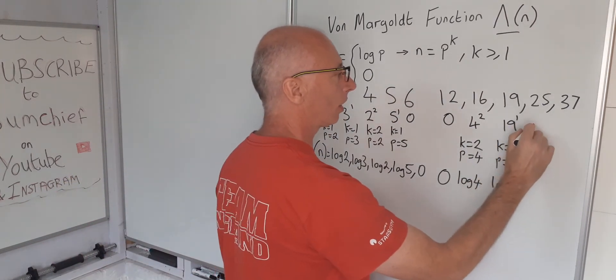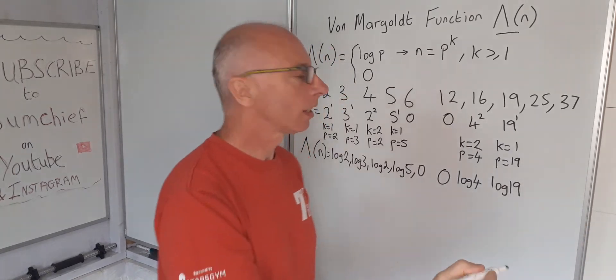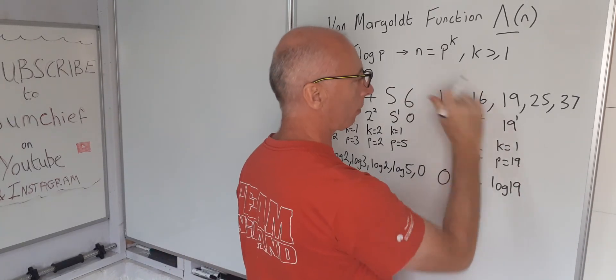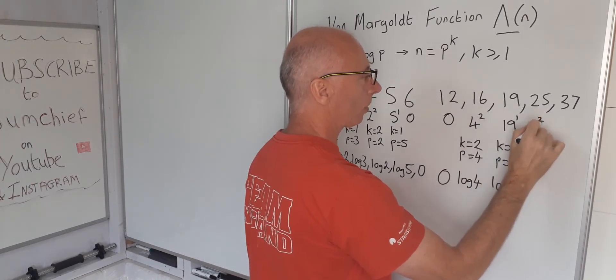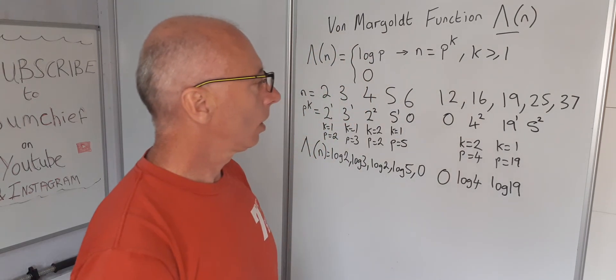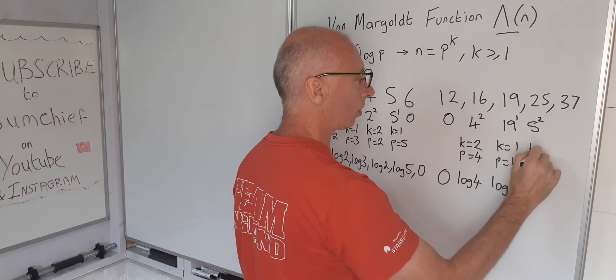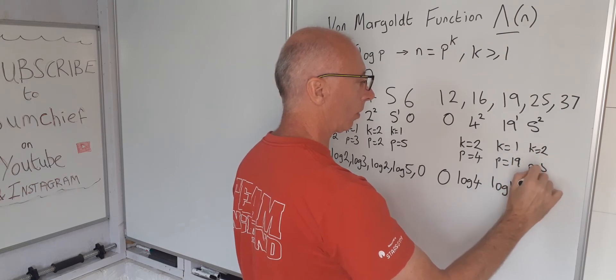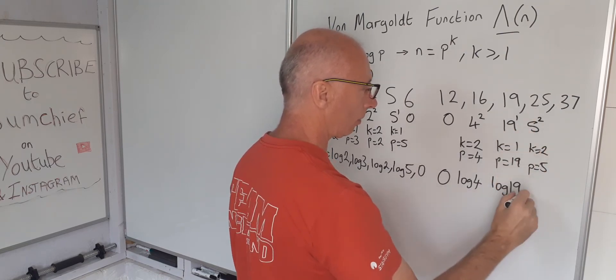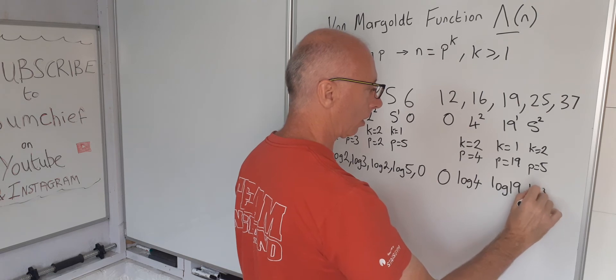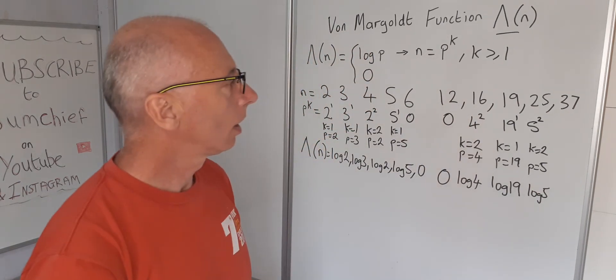Twenty-five. Twenty-five is a perfect square, so the perfect square is going to be fine here. Five squared. So five squared. Using this, K equals two, P equals five. So twenty-five will give us log five. Okay.